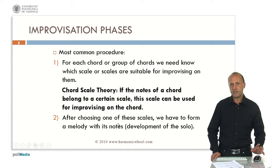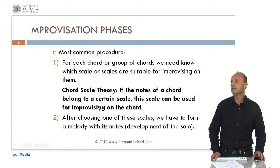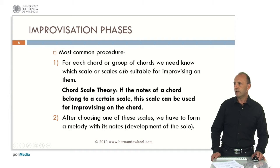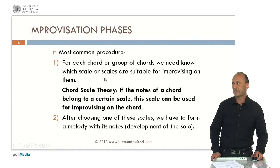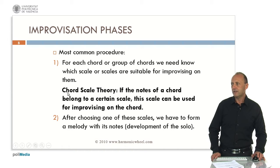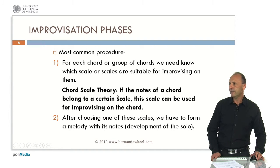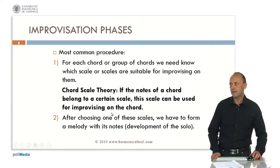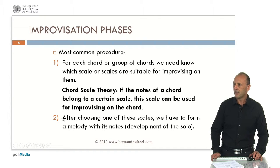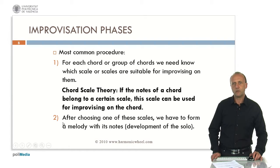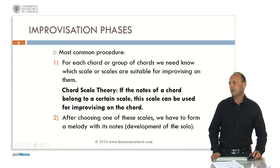Usually the improvisation consists in two phases. The first one is very technical. For each chord or group of chords we need to know which scale or scales are suitable for improvising on them. For this phase we can use the chord scale theory, which states that if the notes of a chord belong to a certain scale, this scale can be used for improvising on the chord. It's very simple. The second phase is more creative and needs experience. After choosing one of these scales we have to form a melody with its notes — that is, we have to develop the solo.